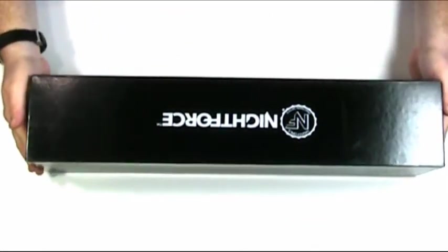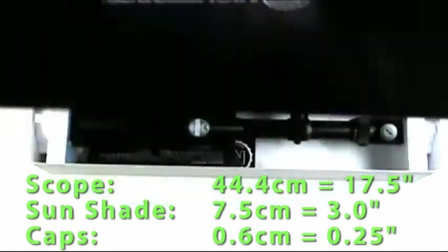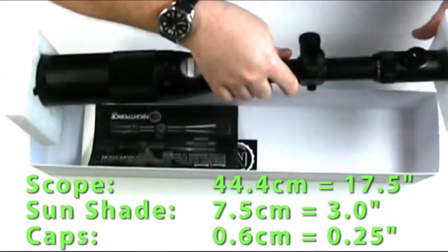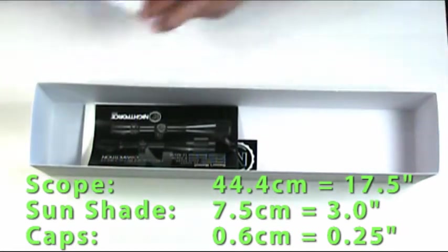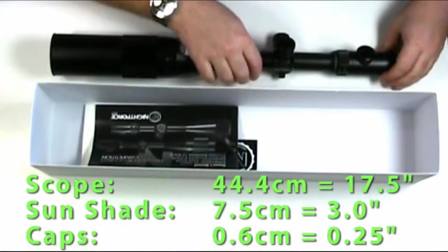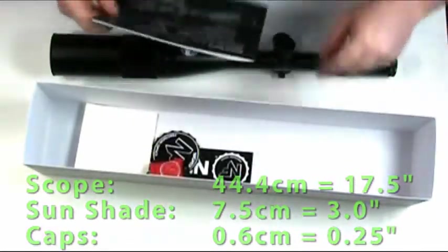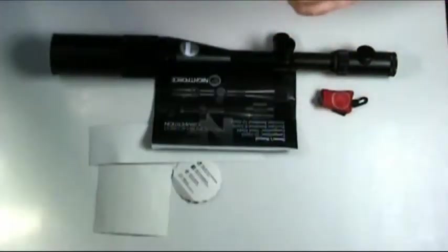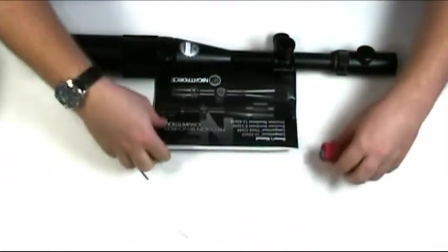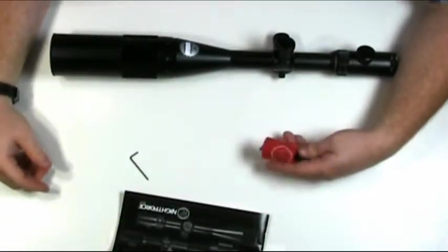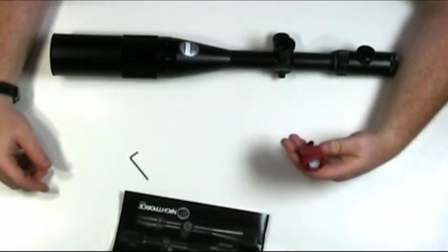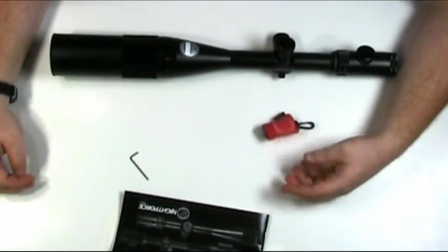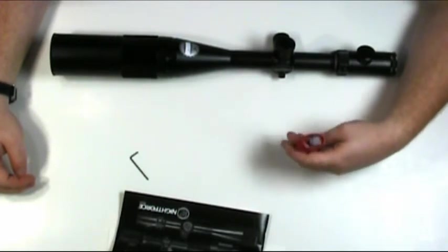Let's dig in. Initially you got the scope, it comes with these styrofoam end caps to help keep it safe in transport. Got a manual and a few other little things. It's nice that Night Force included their own little cloth cleaning microfiber thing for optics.